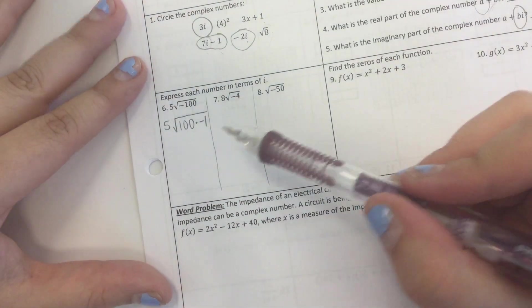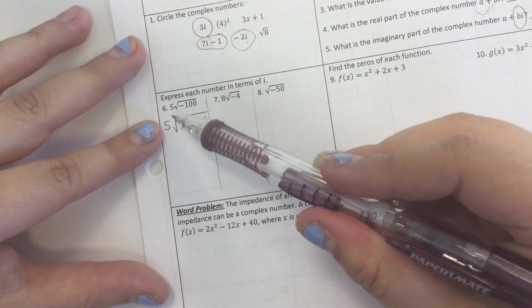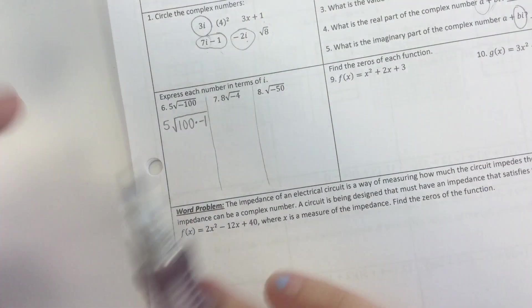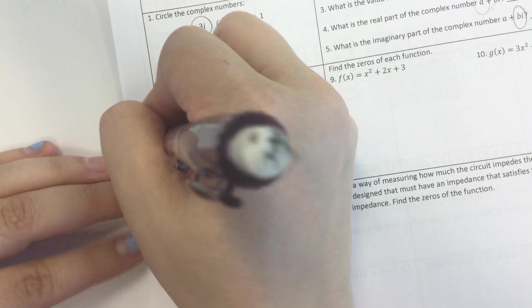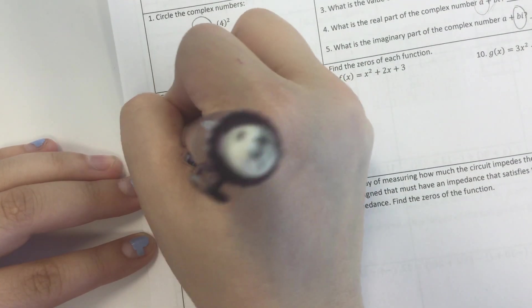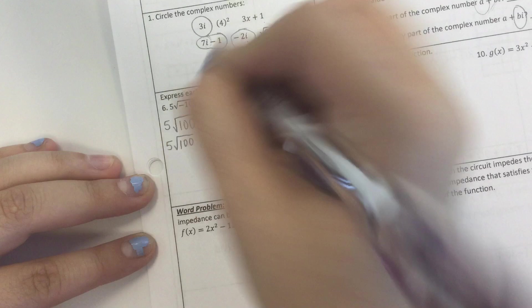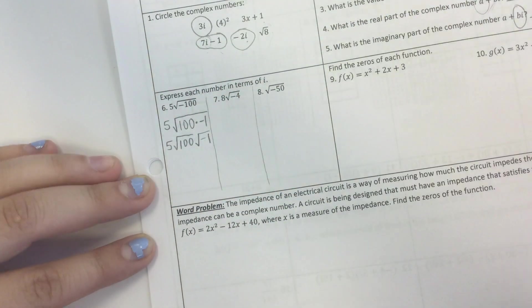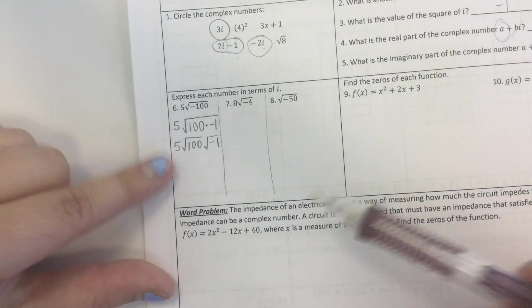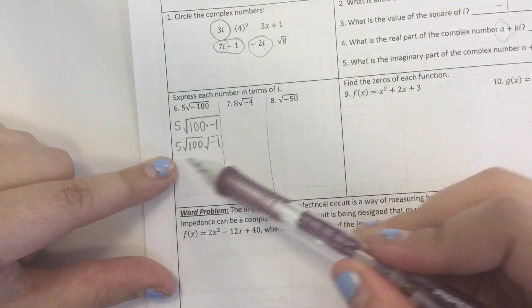Alright, so I know when I multiply two things underneath a square root sign, I can just make it the product of two square roots. So I'm going to rewrite it like that. 5 square root of 100, square root of negative 1. Okay, now let's deal with this part right here.